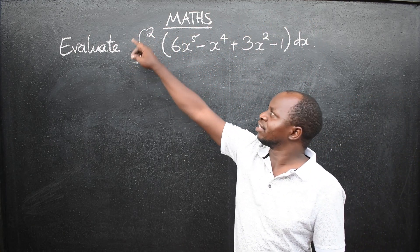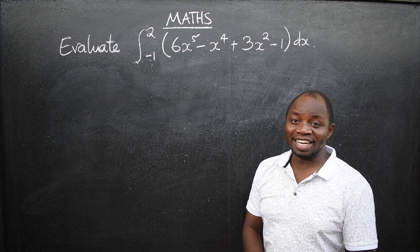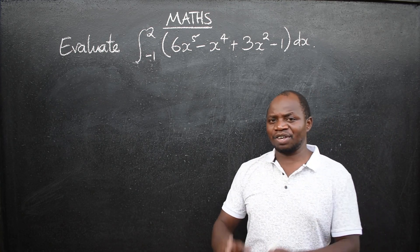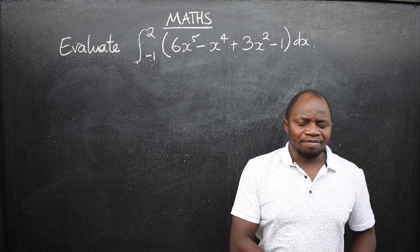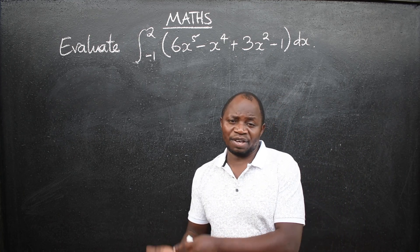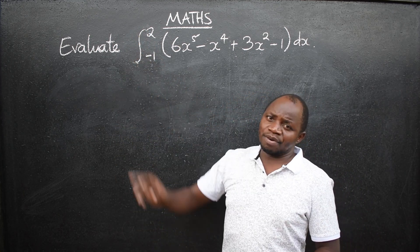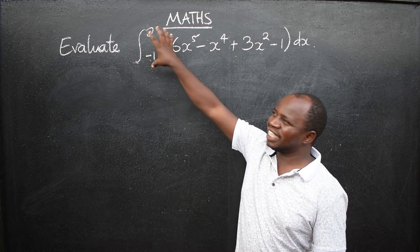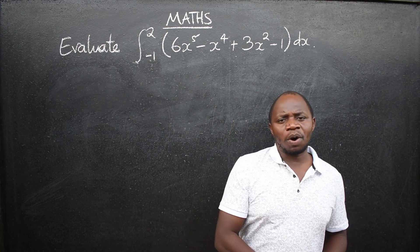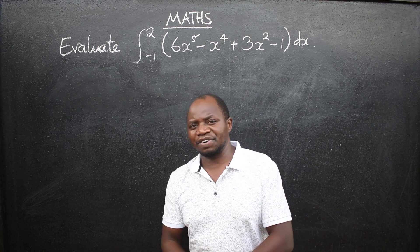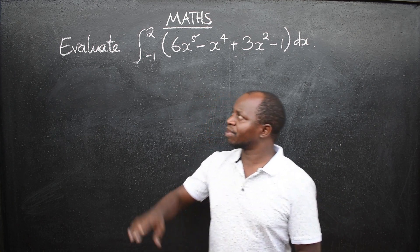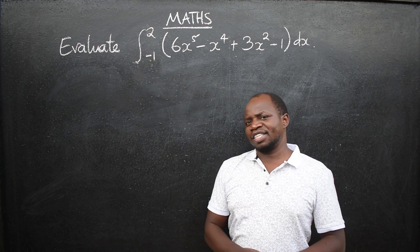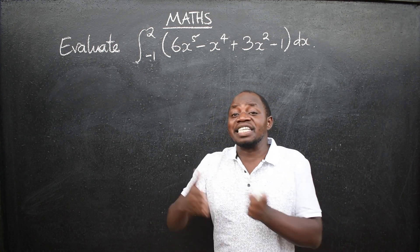Limits have been given — the upper limit 2 and the lower limit negative 1. Whenever you see such a question, know that you are dealing with calculus. We have differential calculus and integral calculus. When you see this integral symbol, we are dealing with integral calculus. We also distinguish between definite integration and indefinite integration. When limits are provided, like here, this is definite integration, not indefinite.